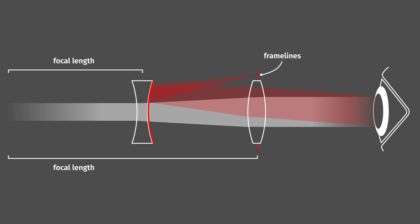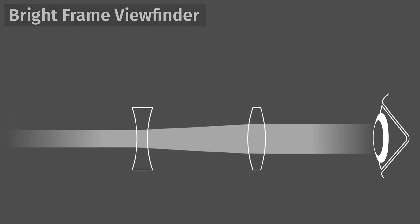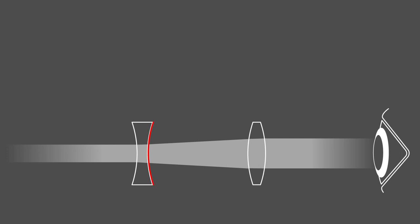Okay, last one. The problem of the Albada viewfinder is that the curvature of the negative lens is both used for refracting light and for reflecting it. That's a bit of unnecessary complexity. Can we, maybe, split the refracting and the reflecting parts of this concept? Sure. And that's the bright frame viewfinder.